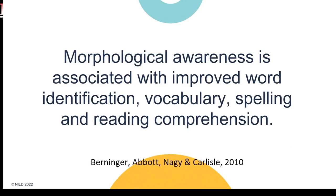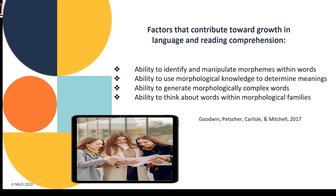Verninger and colleagues reiterate that morphological awareness is associated with improved word identification, vocabulary, spelling, and reading comprehension. In a 2017 study examining different dimensions of morphological awareness in adolescence, several factors contributed toward growth: the ability to identify and manipulate morphemes within words; the use of morphological knowledge to determine meanings; the ability to generate morphologically complex words; and the ability to think about words within morphological families.